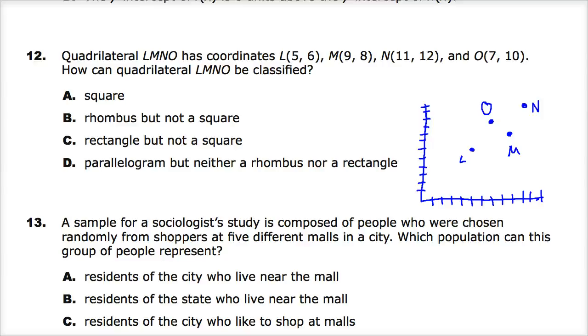Welcome, this is Integrated Math 3 Practice Test for TenReady or TCAP. This is question number 12. As you can see, I've drawn a terribly bad graph on here, so awesome for me. The question says, quadrilateral LMNO has coordinates at L(5,6), M(9,8), N(11,12), and O(7,10). How can quadrilateral LMNO be classified?